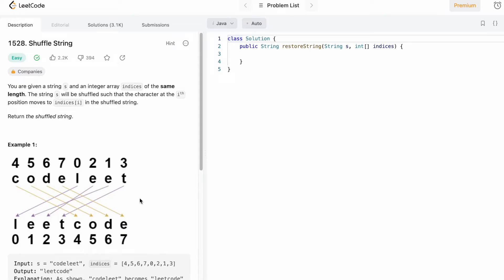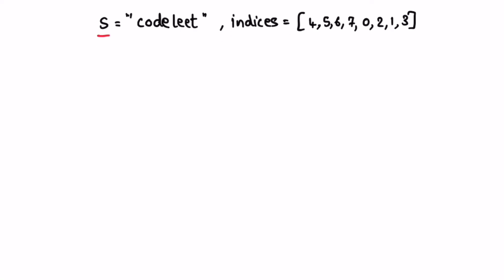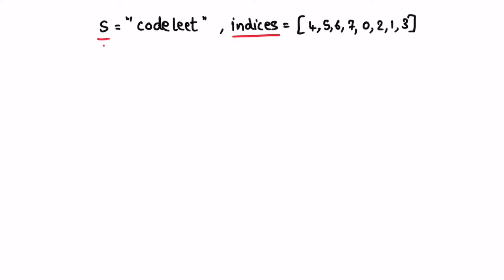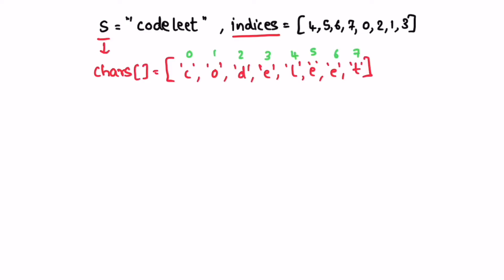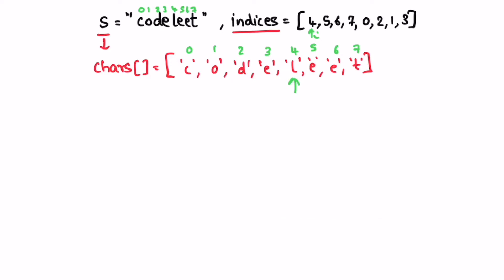Let's take a look at this example and see how this question can be solved. We start by converting the string into a character array so that we can use it to form our output. This character array is of the same length as the indices array. We use the indices array — i is pointing at 4, so we have to insert the new character at that position.